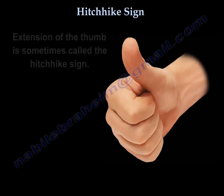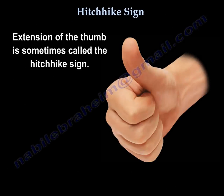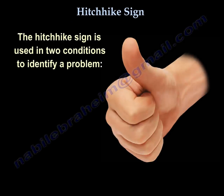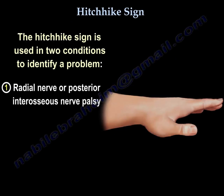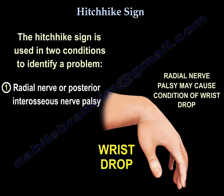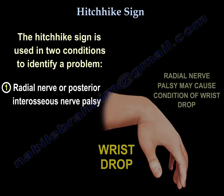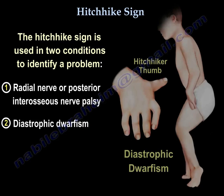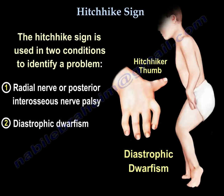The hitchhike sign — sometimes called the hedge-hike sign — is used in two conditions to identify a problem. The first one is radial nerve or posterior interosseous nerve palsy. The second one is diastrophic dwarfism.